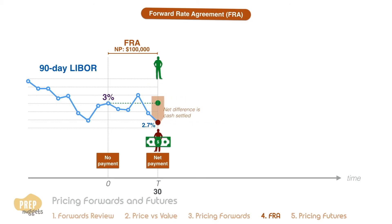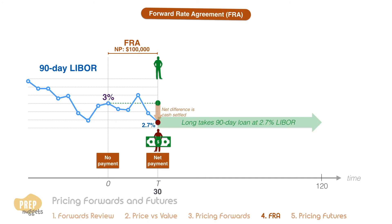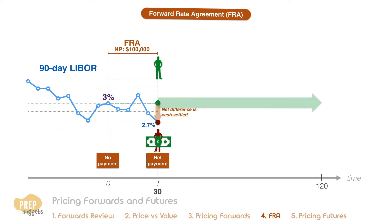After settlement, Green can take a $100,000 loan at the current LIBOR rate as he intended. Note that even though he takes the loan at a 2.7% LIBOR rate, when we take into account the net cash amount paid to the short, the effective interest rate that he paid is closer to the 3% reference rate. So the long has lost out for entering the FRA in this case.